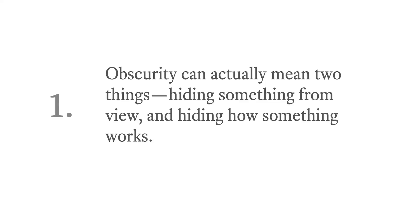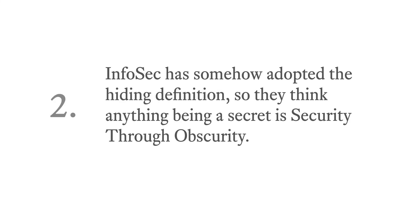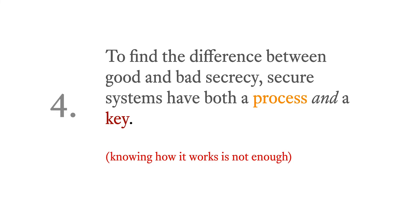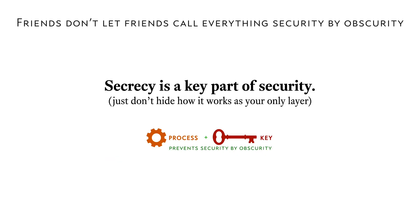So here are the takeaways. Obscurity can actually mean two different things: hiding something from view, and hiding how something works. The infosec community, especially new people, have come to think that anytime you hide something it's security by obscurity — and this is not correct. Kirchhoff's Principle just means hiding how something works as its only security layer is a bad idea. To know the difference between good and bad security, ask yourself if you need both a process and a key. It's okay to hide key material, but don't base your security on the enemy not knowing the mechanism. Friends don't let friends call everything security by obscurity.